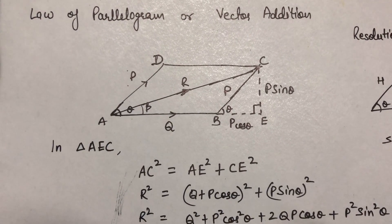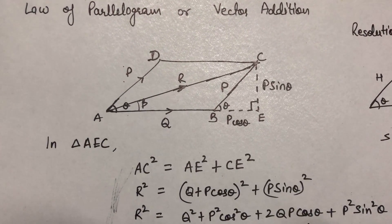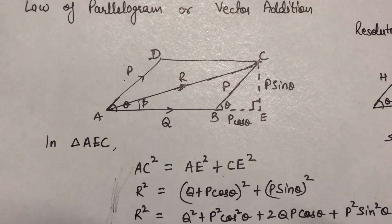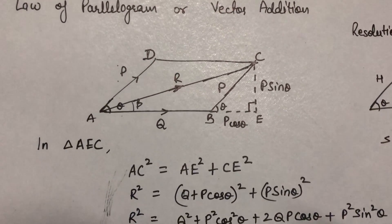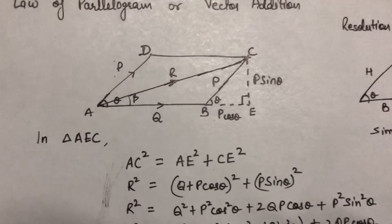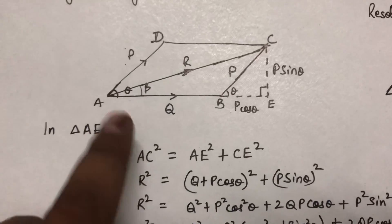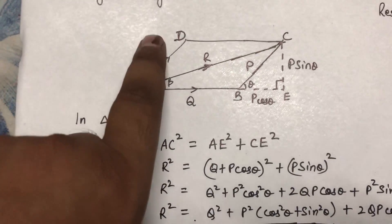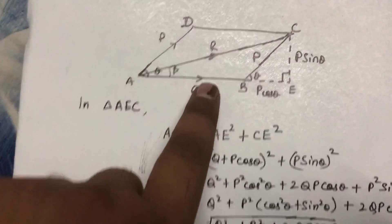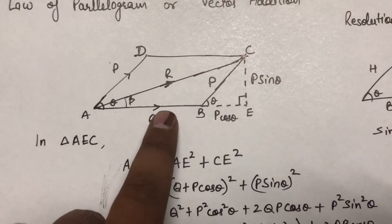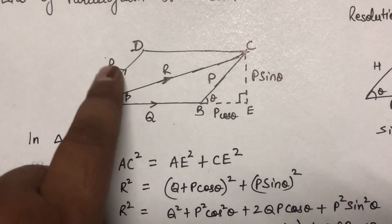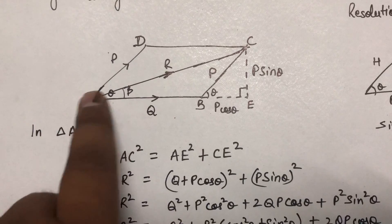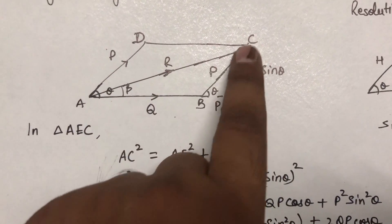Law of parallelogram and vector addition. In this law we have to find the resultant of two forces acting at a point. For the figure shown, we suppose there is a point A on which two forces P and Q are acting simultaneously. The resultant of these two forces is represented by the diagonal of the parallelogram.